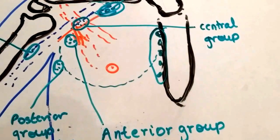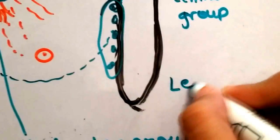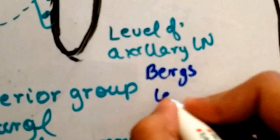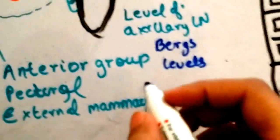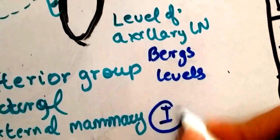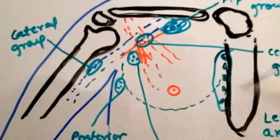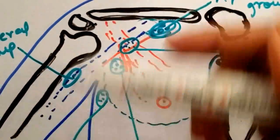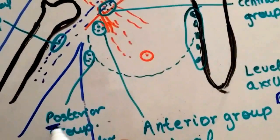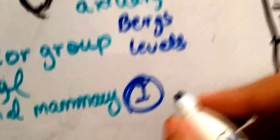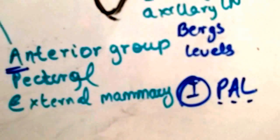There are levels of lymph nodes described, known as Berg's levels of axillary lymph nodes. There are three levels. Level one consists of lymph nodes that lie lateral and below the pectoralis minor muscle — these are the posterior group, the anterior group, and the lateral group of lymph nodes. I remember level one as PAL — Posterior, Anterior, and Lateral.